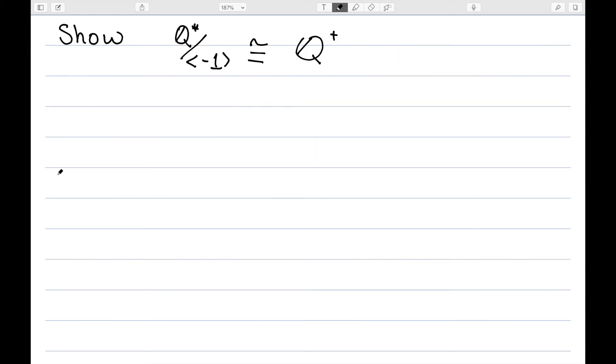Let's show that Q star mod the subgroup generated by negative 1 is isomorphic to Q plus. So as a reminder, Q star is all the non-zero rationals, and Q plus is all of the positive rationals. This means I need a function F going from Q star onto Q plus, so from the non-zero rationals to the positive rationals. And I need this to be a surjection, a homomorphism, and I need the kernel to be the subgroup generated by negative 1.